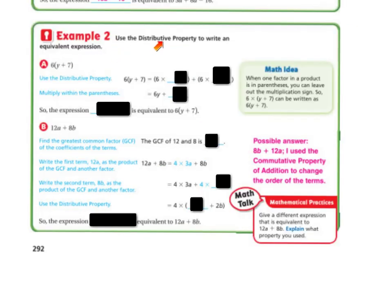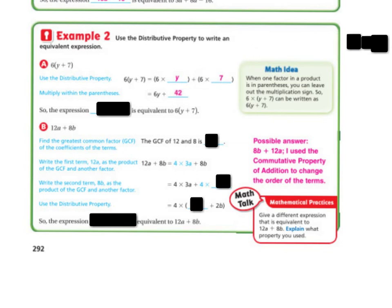Example 2: use the distributive property to write an equivalent expression. With 6 times (y plus 7), we do 6 times y and 6 times 7, then add the terms. Using the distributive property gives us 6y and 6 times 7 equals 42, so the expression is 6y plus 42.